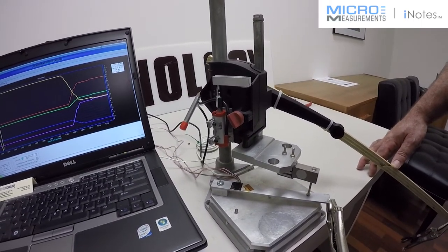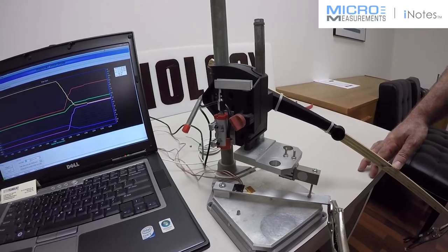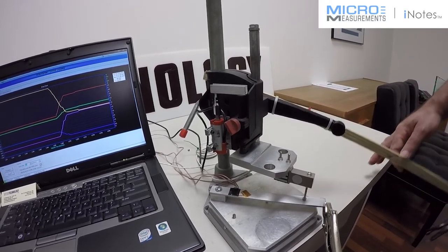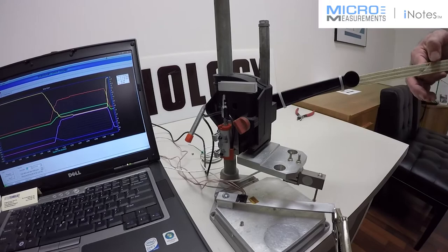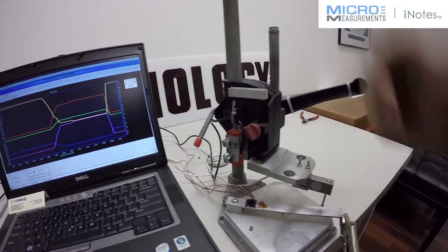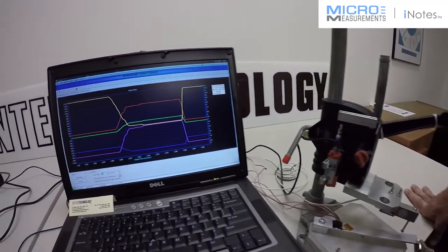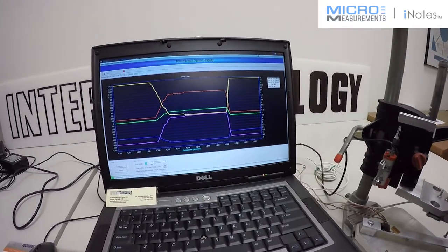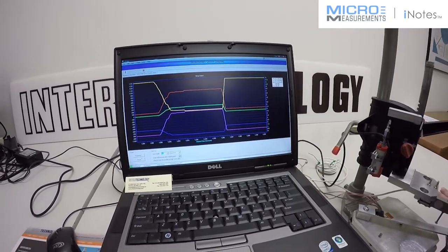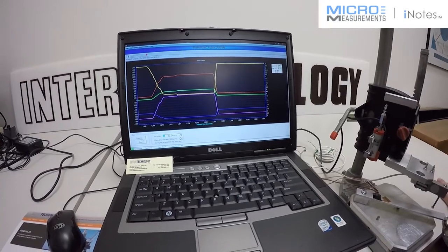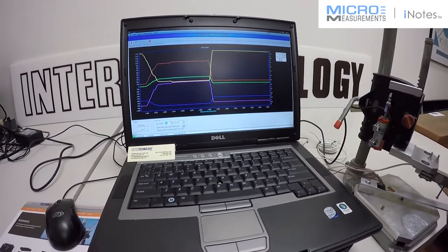The A-to-Ds function much faster though, so you'll never lose transient data. After loading, we can look at the strain data against the load or against the displacement, also showing off Strain Smart, which is our software for the System 8000.